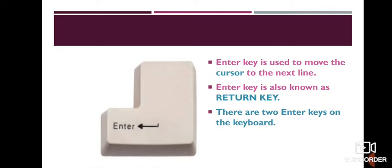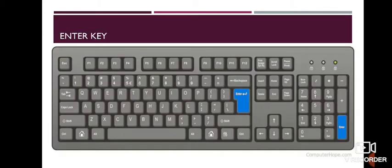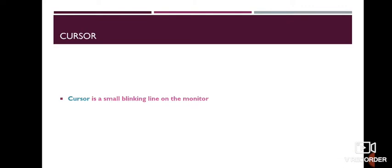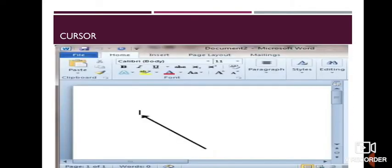There are 2 Enter Keys present on the keyboard. Look at the picture — keys in blue color. There are 2 Enter Keys on the keyboard. Now, what is a cursor? Cursor is a small blinking line on the monitor. An arrow is showing a cursor on the screen. It is a small blinking line.